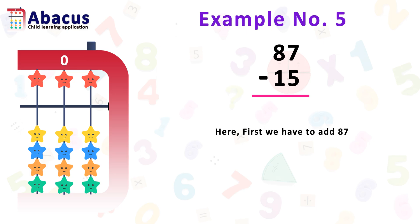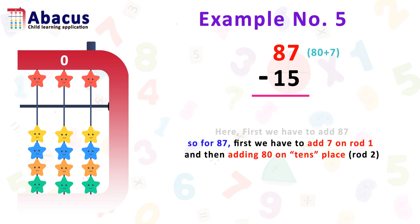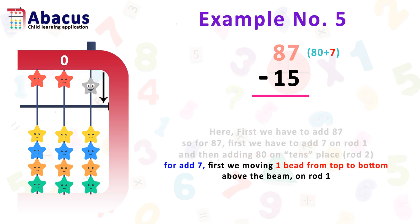First, we have to add 87. For 87, first we add 7 on rod 1, and then add 80 on the 10th place — remember, 10th place means rod 2. For adding 7, first we move the top bead to the bottom above the beam on rod 1, which has a value of 5. For 7, we still need 2 more beads.